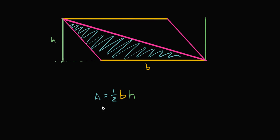So hopefully that makes you feel pretty good about this formula that you will see in geometry: the area of a triangle is one-half base times height, while the area of a rectangle or a parallelogram is going to be base times height.